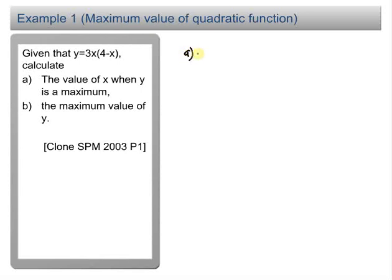We just write out the first equation. We have y equal to 3x times 4 minus x. After the expansion, we have y equal to 12x minus 3x squared.